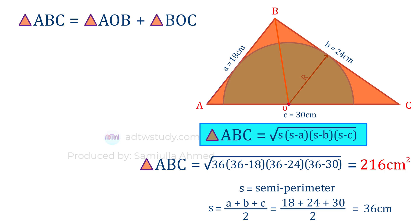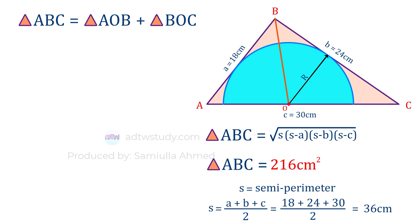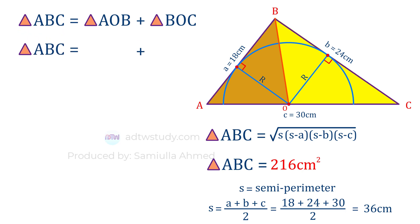Next we need to find the summation of the areas of the two smaller triangles. Since the circumference of the circle touches the two sides, those sides act as tangents to the circle. Drawing a line from the center of the circle to the touching points gives us the radii, which are perpendicular to the two sides. If we consider those sides as the bases of the two triangles, then the radii are the heights of those triangles.